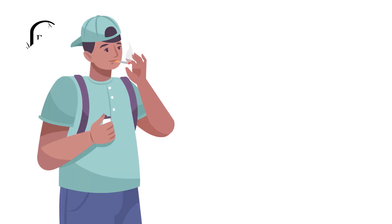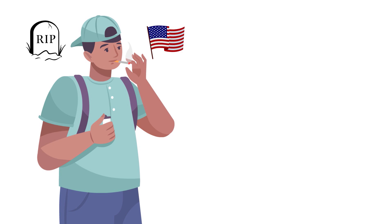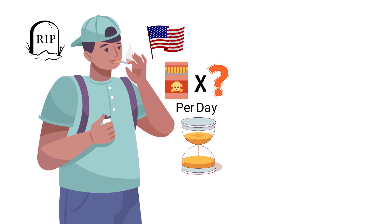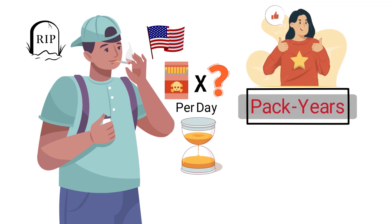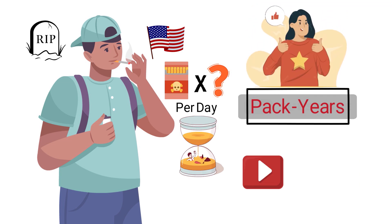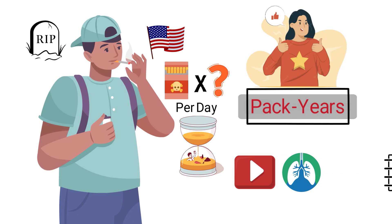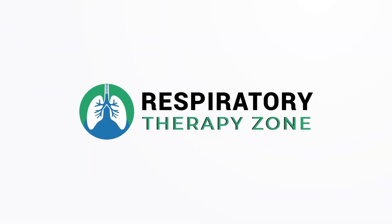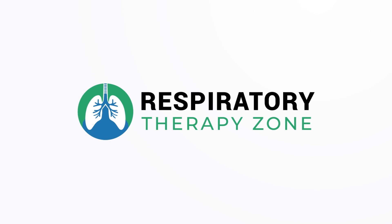Smoking is the leading cause of preventable death in the United States. This is especially true depending on the number of packs that a person smokes per day over a long period of time — this is known as pack years. It's a helpful way to measure how much a person has smoked over their lifetime. In this video, we're going to show you how to easily perform the pack year calculation.